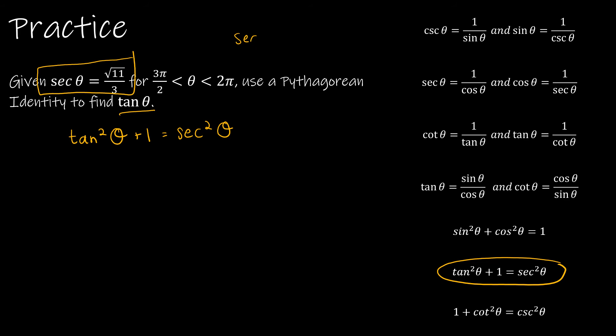So I'm going to say that tangent squared theta plus 1 is equal to secant squared theta. Now, hopefully you know that secant squared theta is exactly the same as secant theta squared. So I'm going to replace secant of theta with radical 11 over 3, and then I'm going to square it. So I have tangent squared theta plus 1 is equal to 11 over 9.